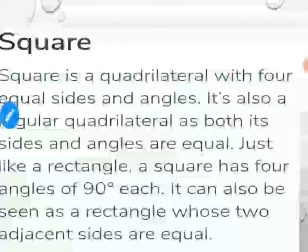A square is a quadrilateral with four equal sides and four equal angles — it is both equilateral and equiangular. Just like a rectangle, a square has four angles of 90 degrees each. It can also be seen as a rectangle whose two adjacent sides are equal. So a square is a quadrilateral in which all sides are equal and all angles are 90 degrees.